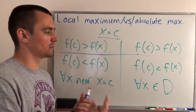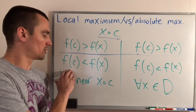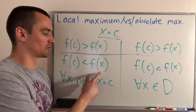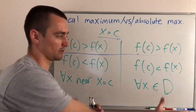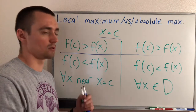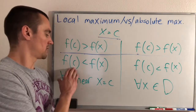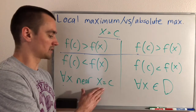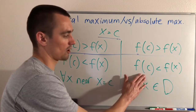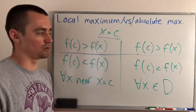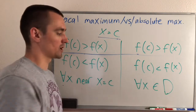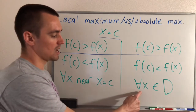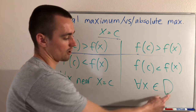A minimum, similarly, occurs when our function is lower at this c value than it is for all other x values around it, or all other x values in the entire domain, depending on if it's local or global. If it's local, then f of c is less than all other f of x values for all x's near c. And if it's a global minimum, f of c will be less than all other f of x values no matter what we plug in for x on the entire domain. The upside-down A just means "for all x" — for all x near x equals c, and for all x that are an element of our domain D.